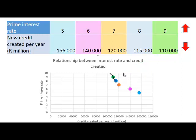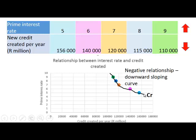If we now draw a line through all the different data points, we can call this line CR for credit created. We can see that this line shows a negative relationship — it is a downward sloping curve. When the prime interest rate increases, going up, the amount of new credit created per year decreases. So it shows a negative relationship between these two variables.